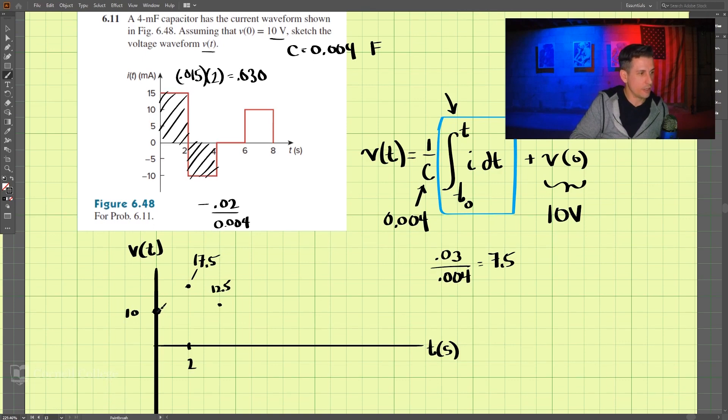So our waveform starts to look like this, and then from 4 to 6, 4 to 6, it is 0. It is 0, so that is just going to look like a flat line, horizontal line there.